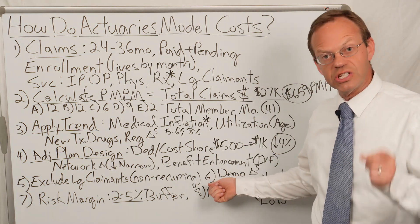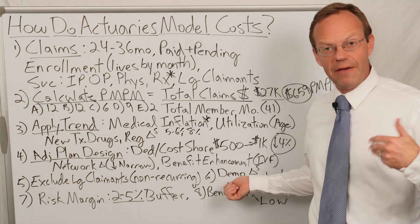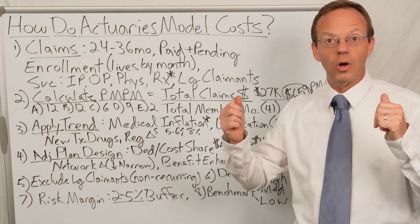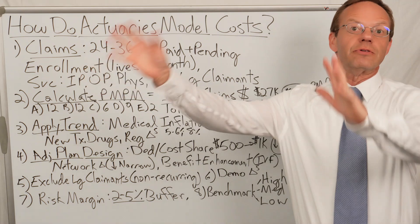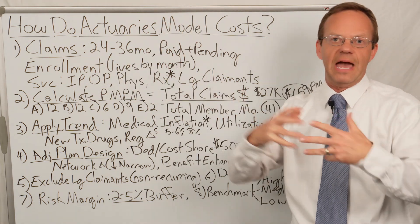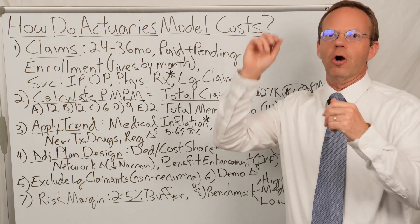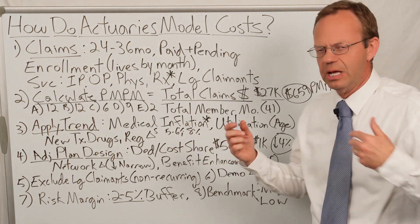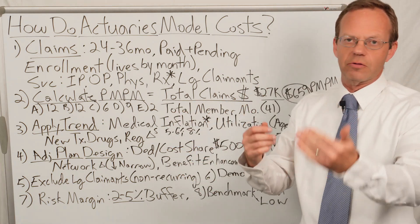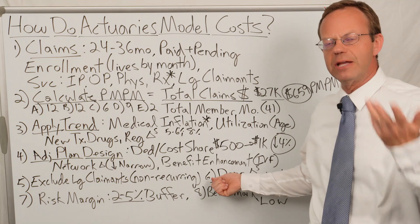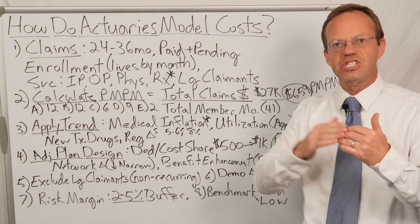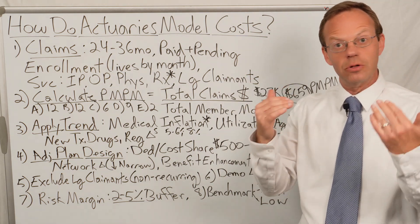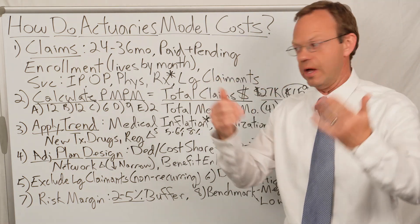Step six: account for demographic changes. For a large employer offering early retirement to a bunch of employees — where older employees are coming off the plan and being replaced by younger employees — there may be major demographic changes that alter the age profile of the plan and therefore the risk. If the age goes down, the risk goes down; if the age goes up, the risk goes up.